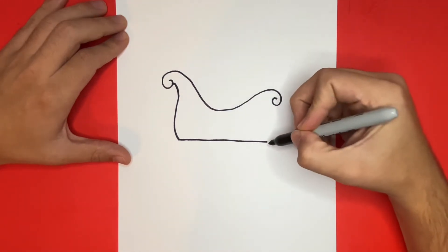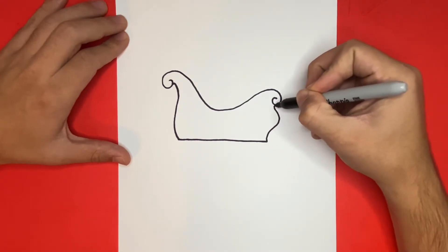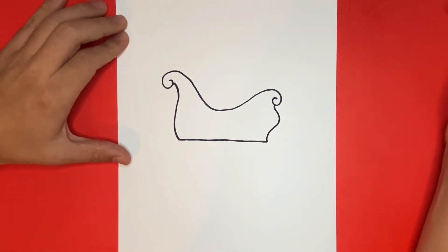Next we're going to use a curvy line to connect this end point right here to the swirl right above. Now we're all done drawing the outline of the top of the sleigh.